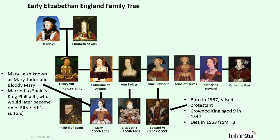However, Lady Jane Grey only actually ruled for nine days because her and her father-in-law, the Duke of Northumberland, were condemned for high treason and thus executed. Mary I, also known as Mary Tudor and Bloody Mary, then comes to the throne. She reigns from 1553 to 1558. She also marries Spain's King Philip II, who would later become one of Elizabeth's suitors.